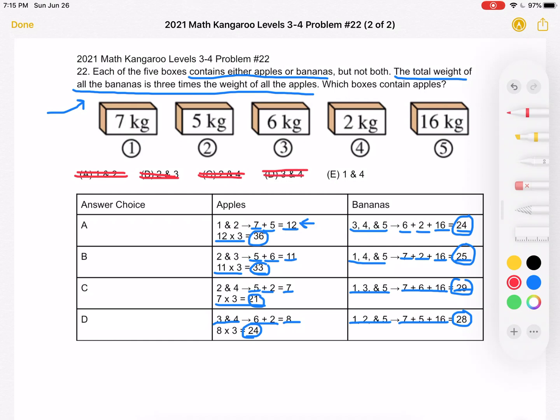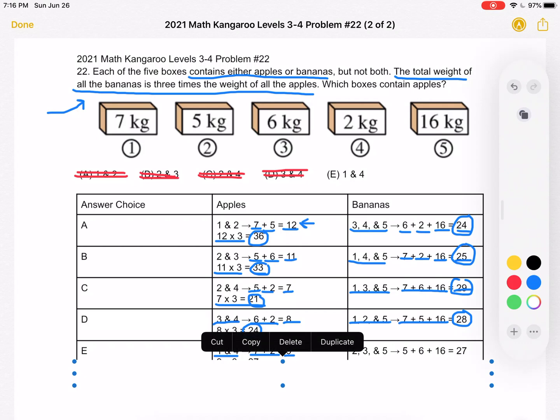I guess at this point, we already know that answer choice E is the one we'll be selecting, but let's make sure that it follows our conditions. So we have that 1 and 4 contain apples. That's 7 plus 2 for a total of 9. The remaining boxes 2, 3, and 5 would contain bananas. That's 5 plus 6 plus 16, which is a total of 27.